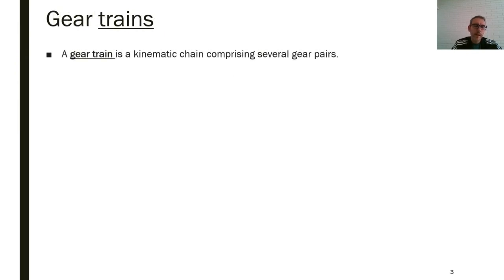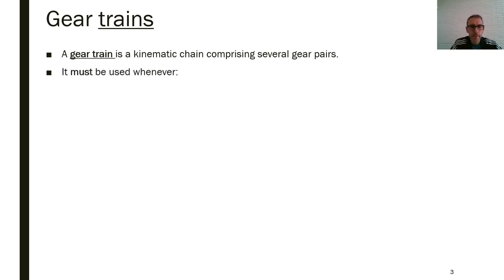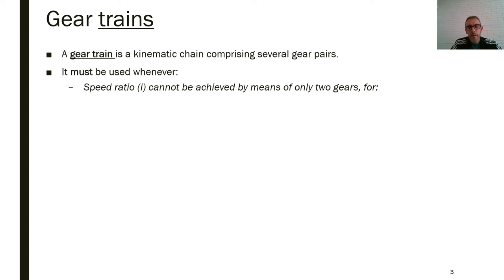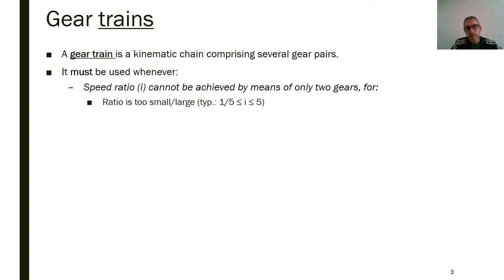What is the definition of a gear train? A gear train is a kinematic chain comprising several gear pairs. We will need a gear train whenever one of these conditions happens — this is in contrast to just using a single pair of gears.